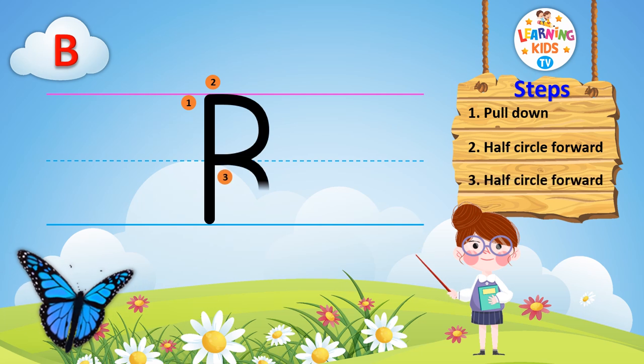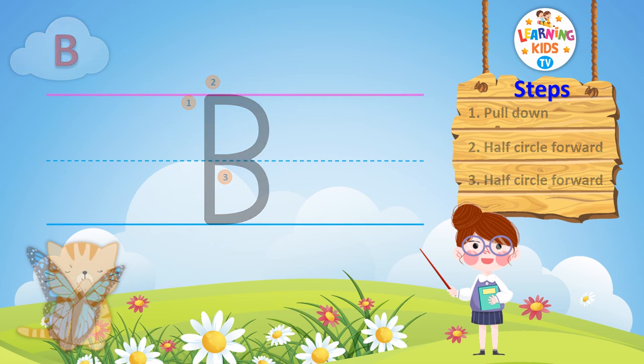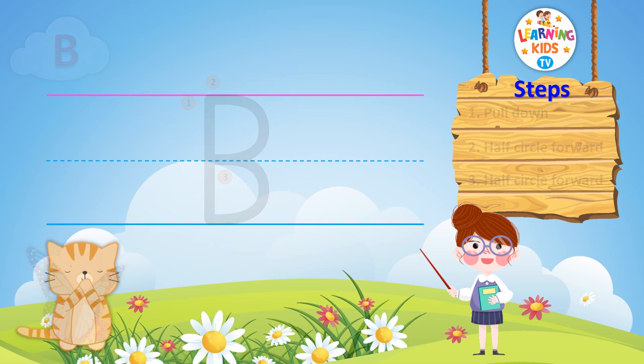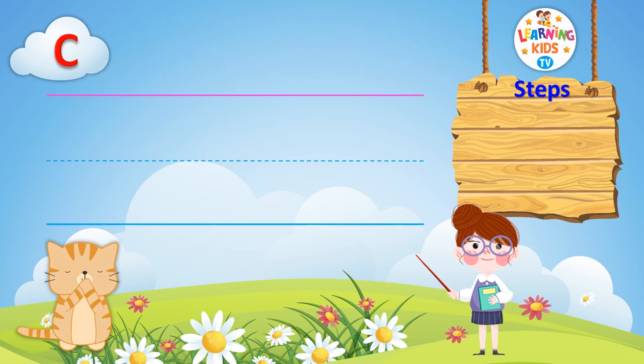Learn to write uppercase letter B. Step 1: pull down. Step 2: half circle forward. Step 3: half circle forward.